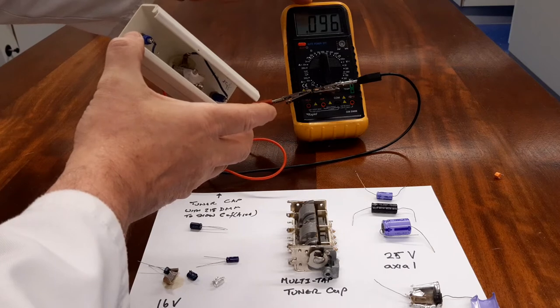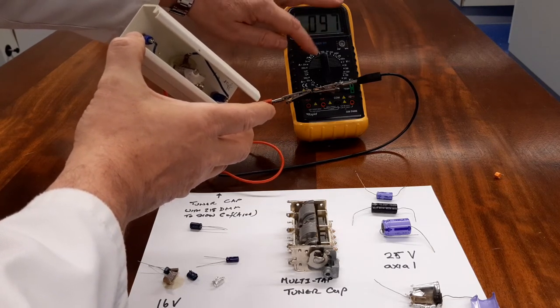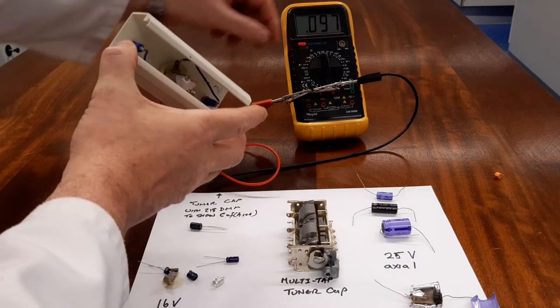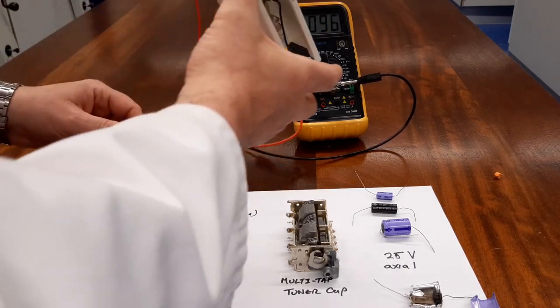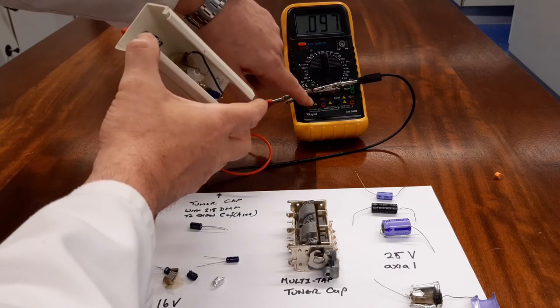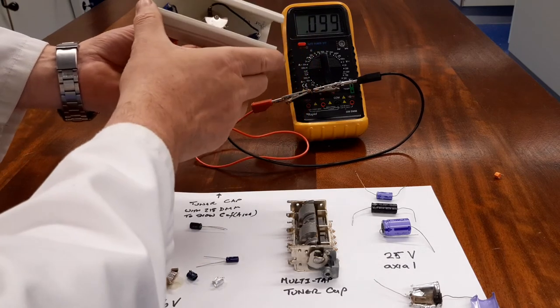With certain multimeters, you have the ability to measure capacitance. This one I've just adapted with crocodile clips, and you can see the value